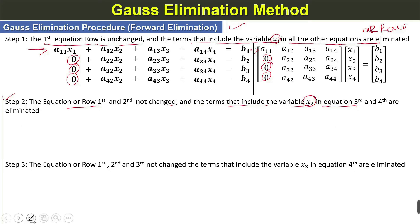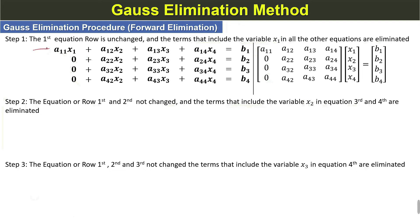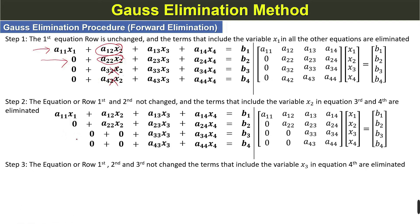In the second step, the first and second equations or rows are not changed, and the terms that include the variable x2 in the 3rd and 4th equations are eliminated. We can see that in the first and second equations nothing changes, but in the 3rd and 4th we eliminate the terms that include x2. Elements A32 and A42 are eliminated.